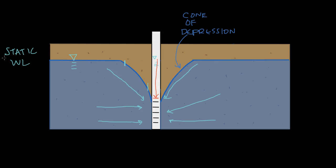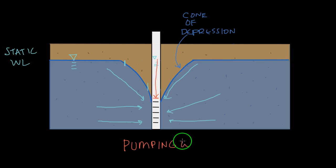Let's go back to our drawing and define a couple more important terms. We've labeled the static water level and the cone of depression. Another term we need to define is the pumping water level — that's the water level inside of the well when we're pumping. It's the equilibrated level inside the well, not right after we turn the pump on, but once it stabilizes. The water level inside the well drops as we're pumping, and eventually reaches some stable point. That stable level is called the pumping water level. So we have the static water level up here before we turn the pump on, and the pumping water level down here after we've pumped the well and reached a stable point.